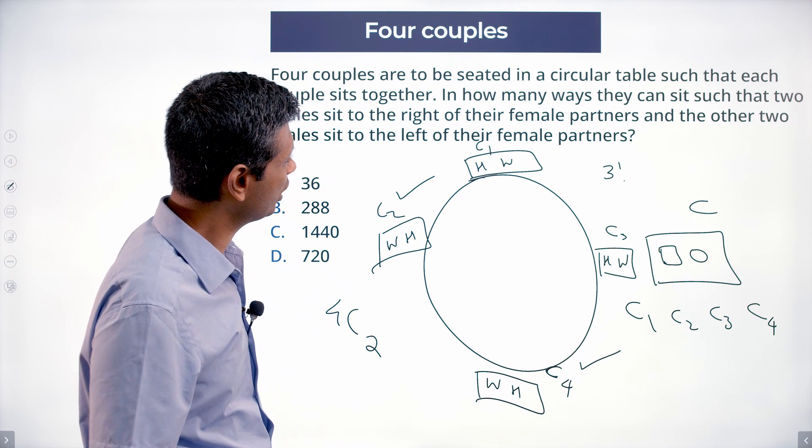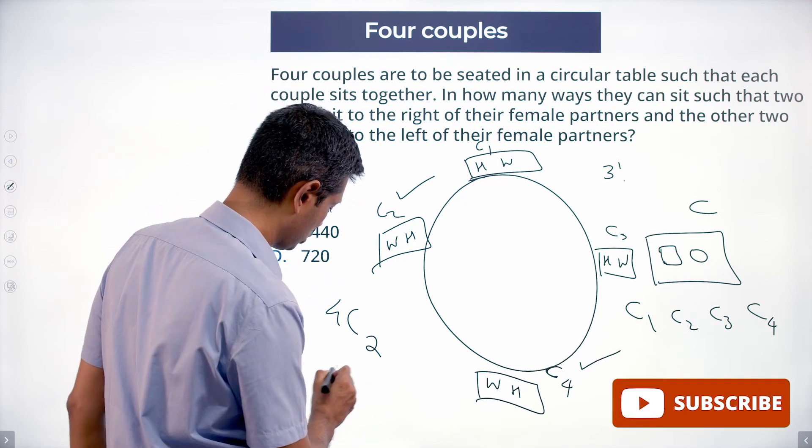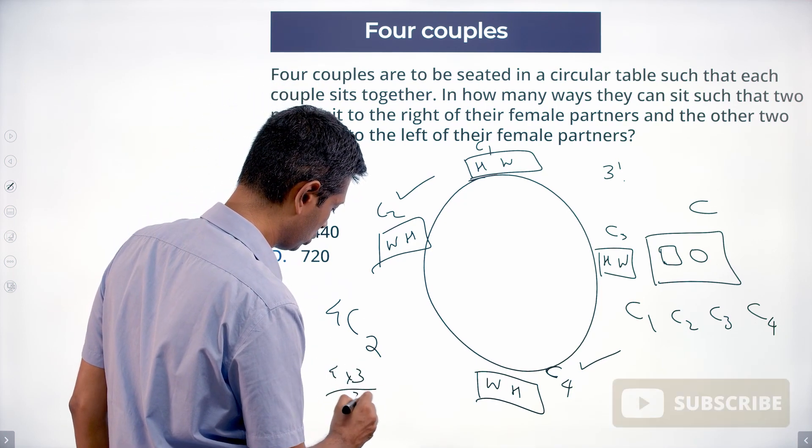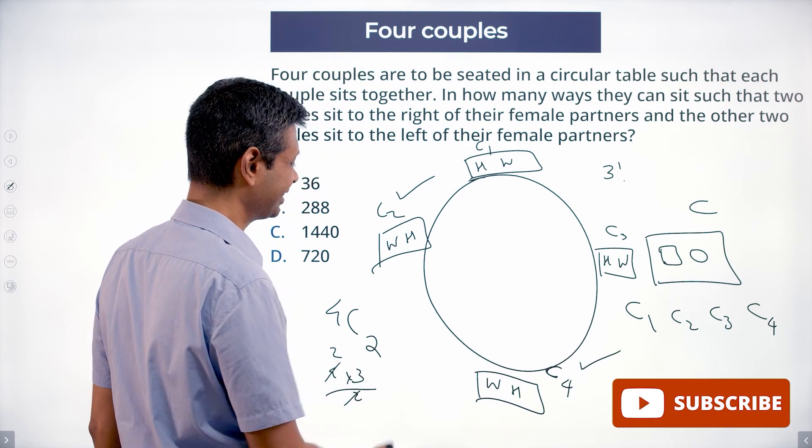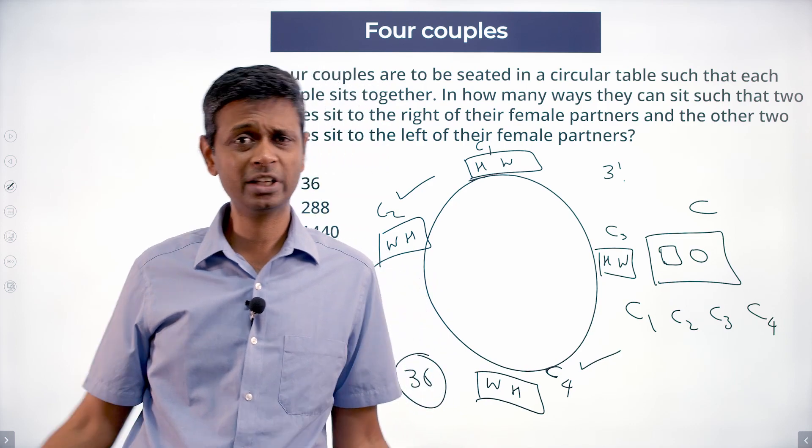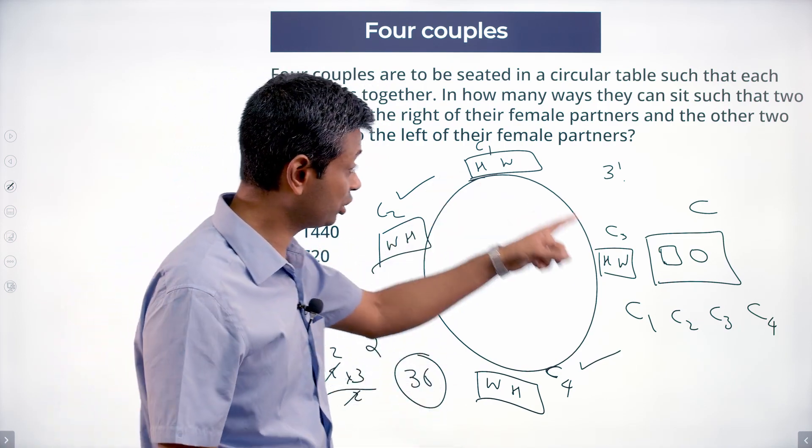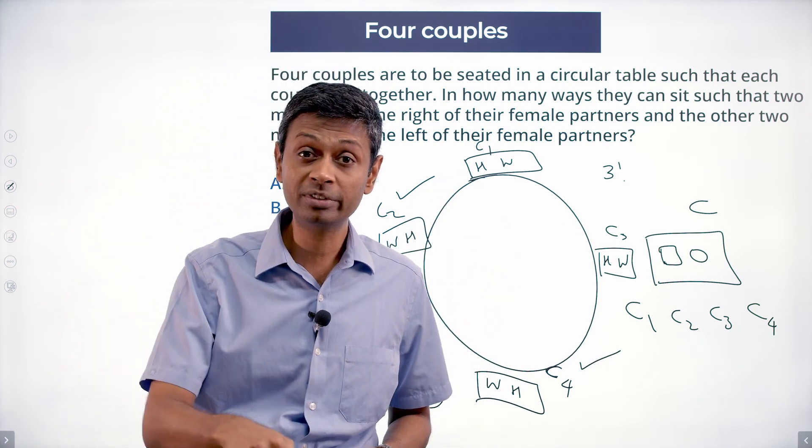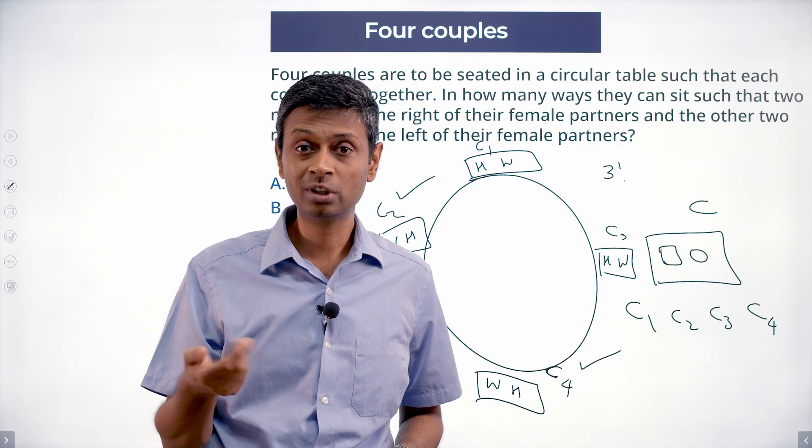Three factorial is six. 4C2 is four into three by two, which is also six. Six into six is thirty-six. So far are we missing something? Are we accounted for everything? Yes we have. The couples can be put in three factorial ways.